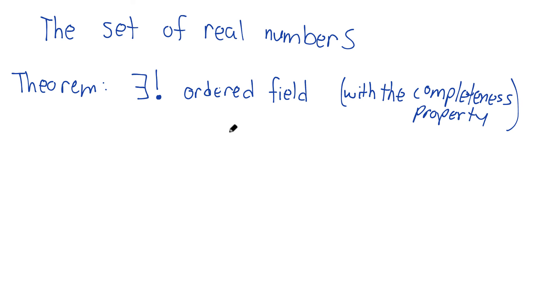There exists a unique ordered field with the completeness property such that the field Q is a subset. This is the script R that we'll be using to describe the real numbers. You may have seen it before, but this is the theorem. There exists a unique ordered field with the completeness property having Q as a subset.